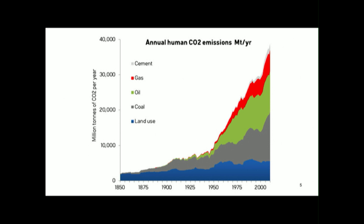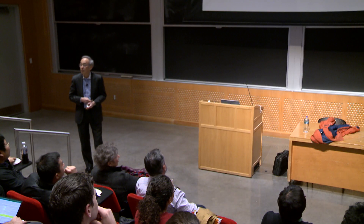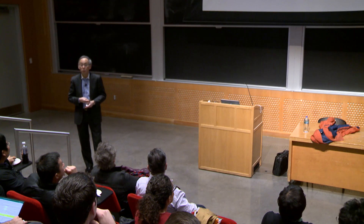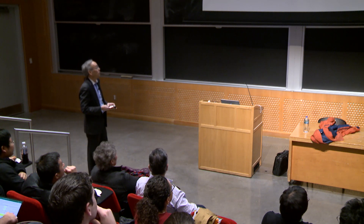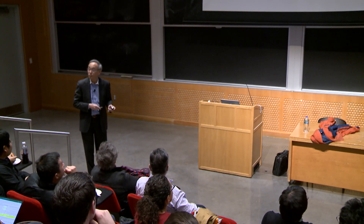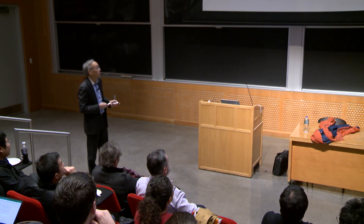The annual emissions of carbon dioxide have been growing over time. This is how it divides into sectors of land use including deforestation, coal, oil, gas, and cement — cement is now 5% of the carbon dioxide emissions in the world. Three quarters of all the carbon emissions have occurred since 1950. You need a longer-term perspective of what carbon emissions have been doing.